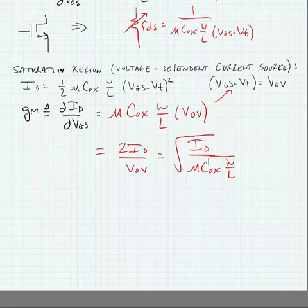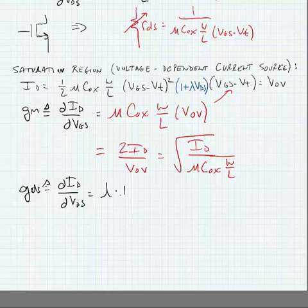Now, if we add our voltage-dependence term on VDS to this expression, we can also define an output resistance, which we're going to call GDS, in the saturation region. And this is defined as dID by dVDS. And this is equal to Lambda times ID.